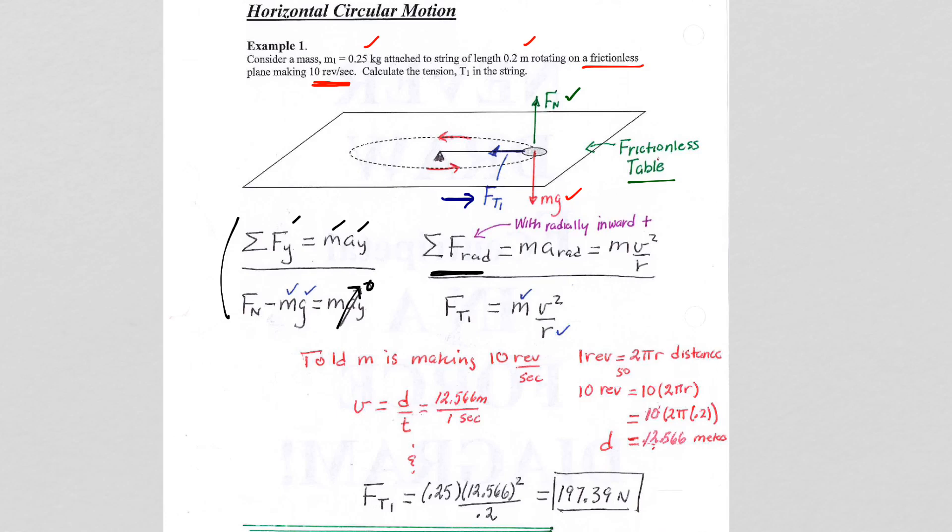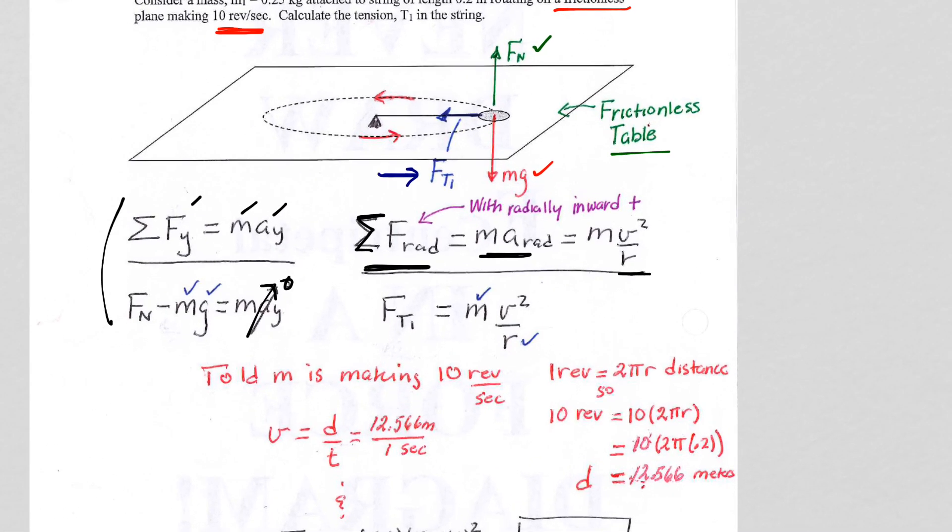Notice that instead of doing the x direction, I want you to do sum of the forces in the radial direction equals mass times acceleration in the radial direction. And for radial acceleration, you plug in v squared on r. And this is really important: radially inward, you will use as positive. So please make a note that radially inward will always be the positive direction for this equation.